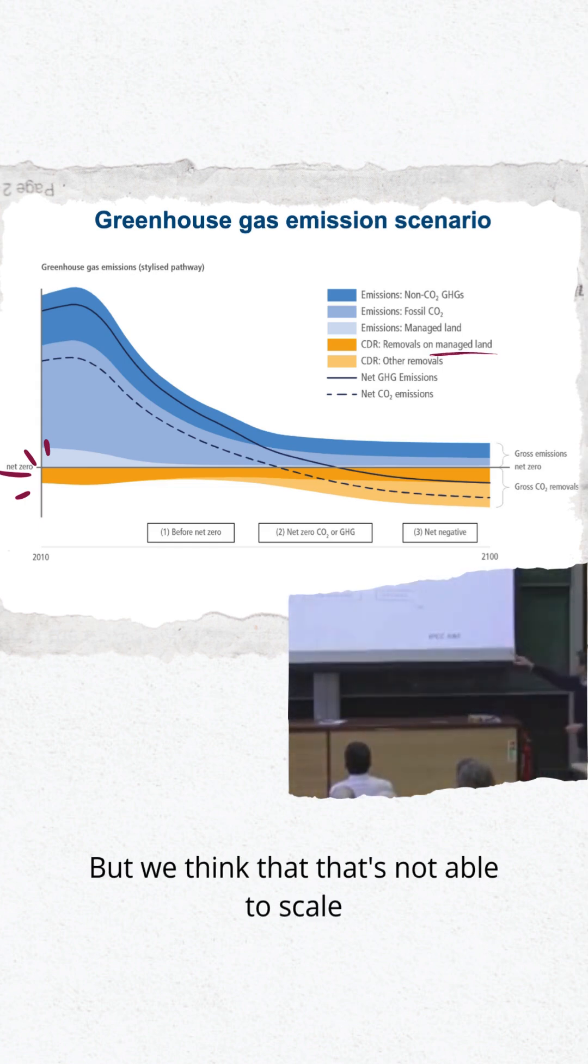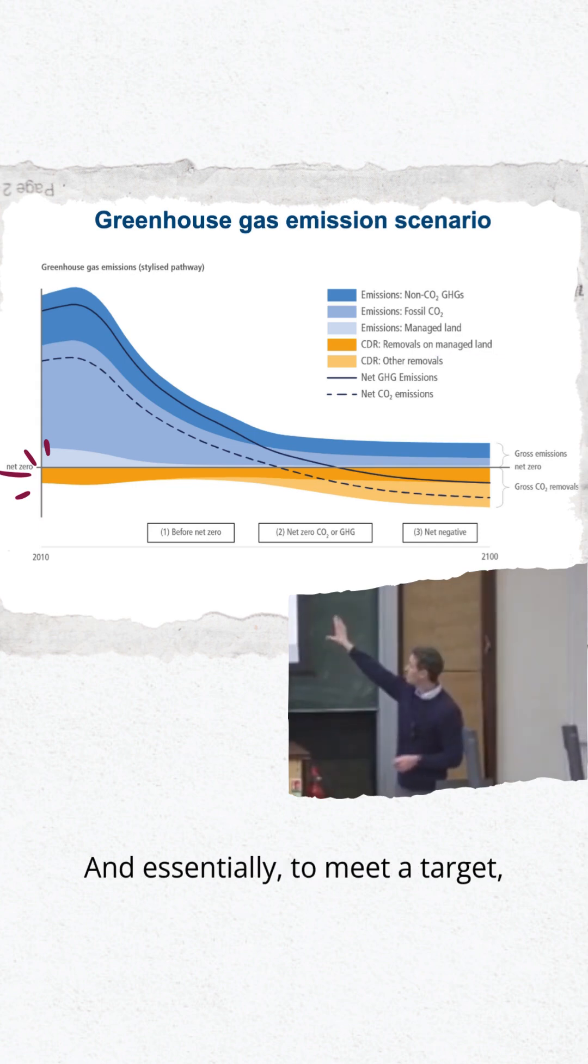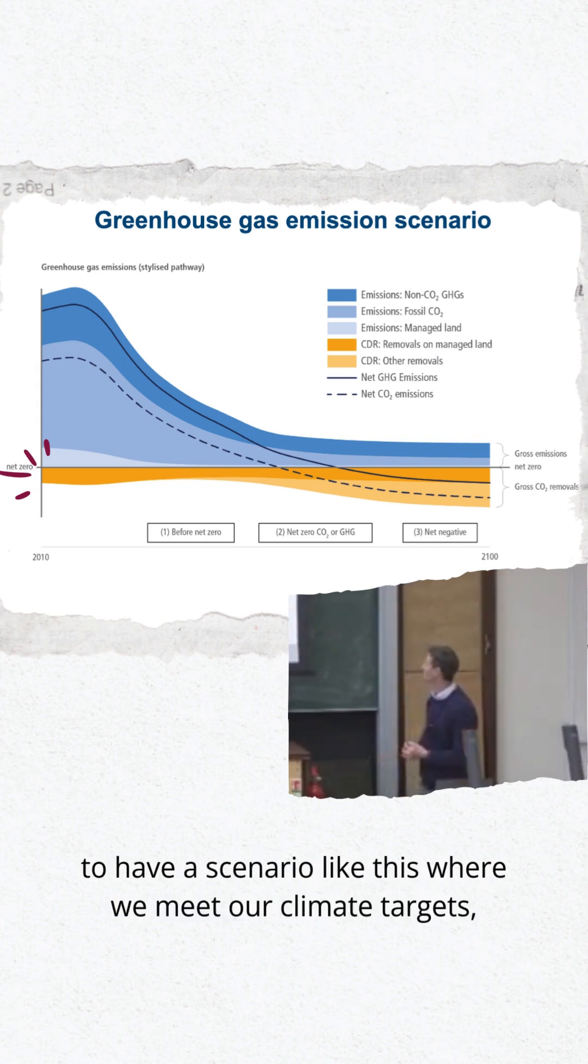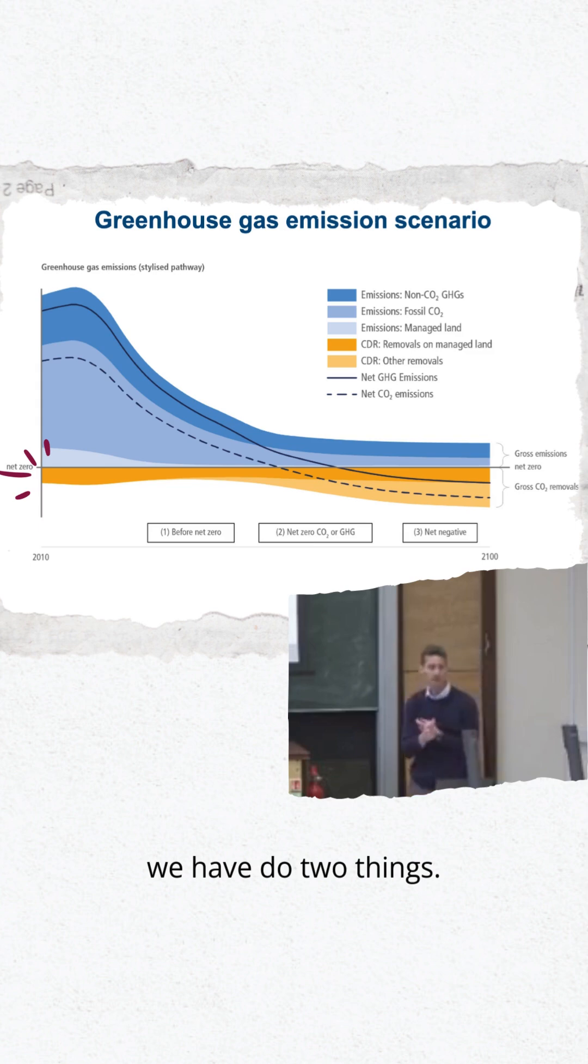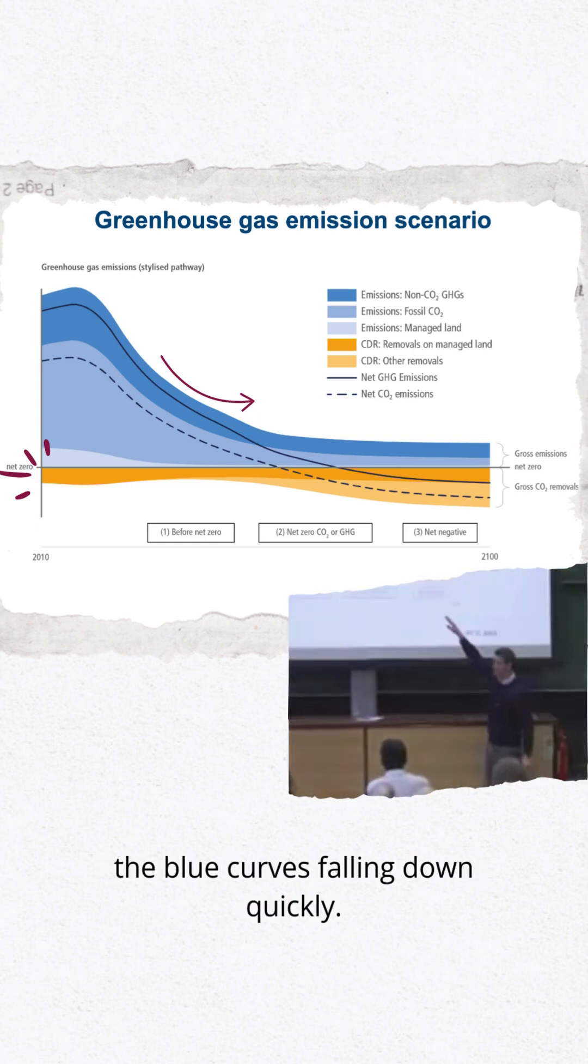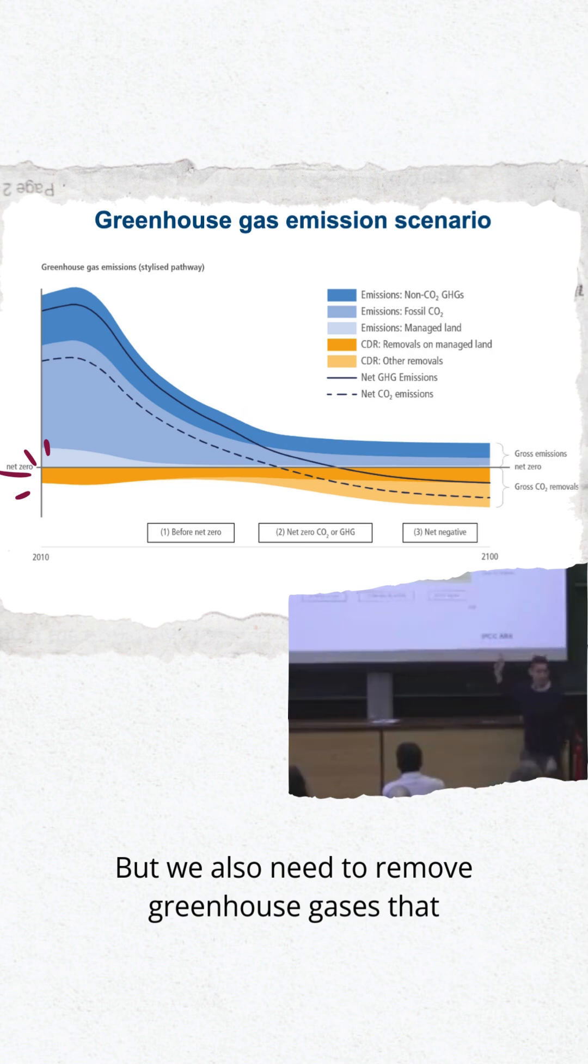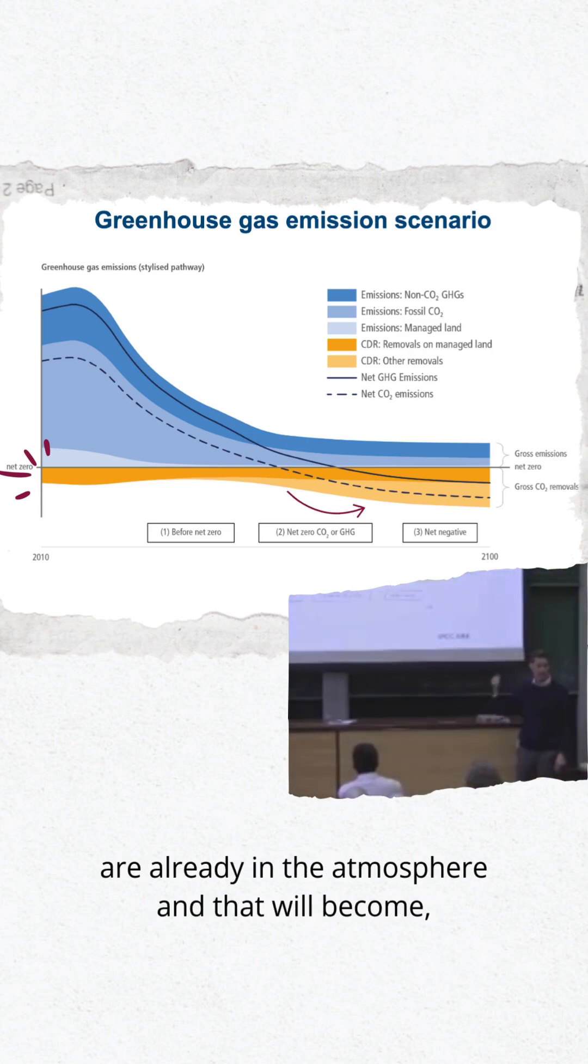But we think that's not able to scale enough to meet our targets. Essentially to meet a scenario like this where we meet our climate targets, we have to do two things. We have to have deep and rapid emissions reductions. That's the emissions curves, the blue curves falling down quickly.